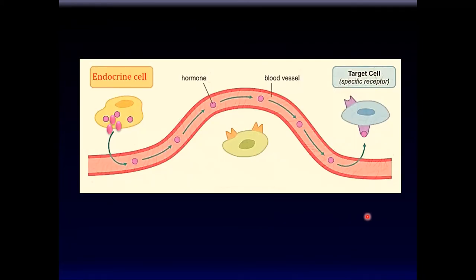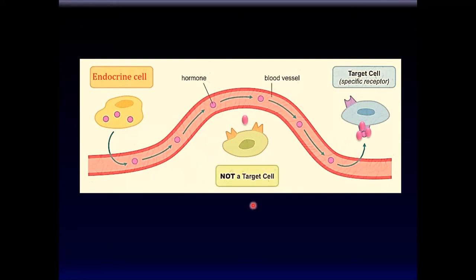Tropisms are mediated by plant hormones. Hormones are produced by endocrine cells, travel via blood, and target cells are identified by receptors. Only those cells that have receptors for the hormones will be influenced by the hormone. Cells that do not have receptors for the hormone will not be influenced — so a cell without the appropriate receptor will not be affected by the hormone.